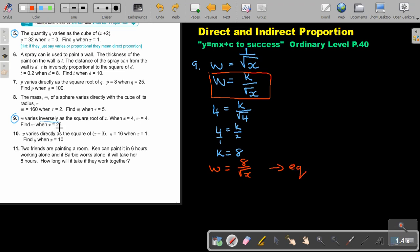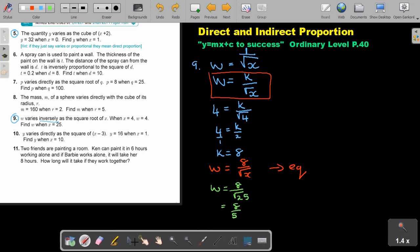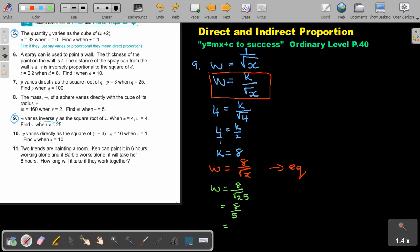But find w when x is 25. So we're just going to use it. Put the square root of 25. So 8 over 5. And then the value of w equals 1.6. So therefore, w equals 1.6. And that is my final answer. The more you practice, the better you're going to become.